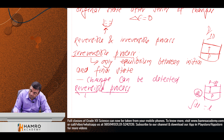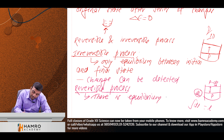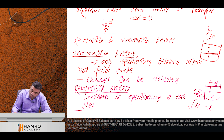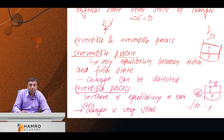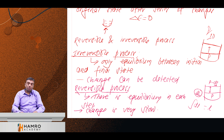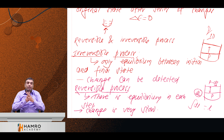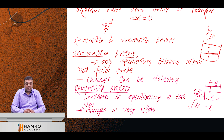In a reversible process, there is equilibrium at each step, and the change is very slow. All natural processes are irreversible. Reversible process is a common theoretical concept used in thermodynamics.